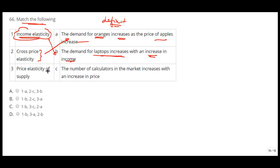So it is own price elasticity. The number of calculators in the market increases with an increase in price because the supply is increasing. So number 3 should be C. I can see only option 3-C matches this, so this will be your answer.